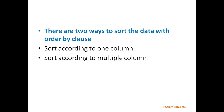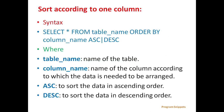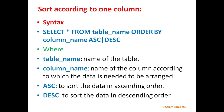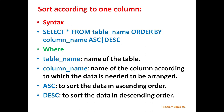There are two ways to sort the data with ORDER BY clause: first, sort according to one column, and second, sort according to multiple columns. For sorting by one column, the general syntax is SELECT * FROM table_name ORDER BY column_name ASC or DESC, where column_name is the name of the column by which the data is to be arranged. ASC sorts in ascending order and DESC sorts in descending order.